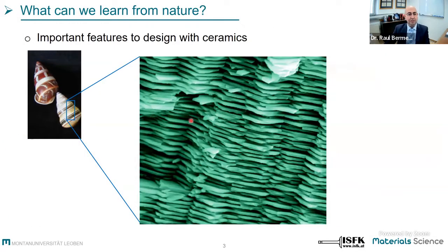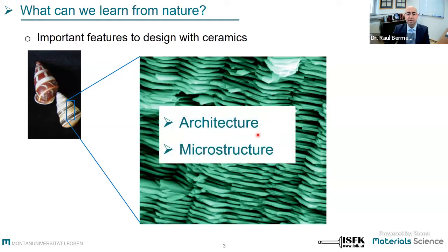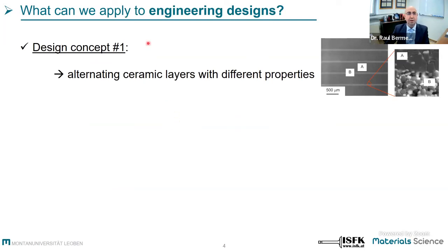Many of you are familiar with this type of picture — the hierarchical architecture of calcium carbonate platelets joined together by a nano-polymer layer. What is important here is to realize there are two main aspects: one is the architecture in terms of how the layers are stacked on top of each other, and the other is the microstructure — elongated platelets joined together and separated by a nano-polymer matrix. We can apply this to engineering designs by making multi-layer systems combining ceramic layers with different properties.